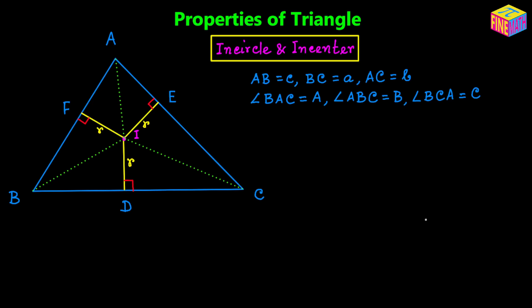Each of these perpendiculars will be of equal length, and let's denote that as lowercase r, which will be considered the radius of the inscribed circle or incircle. If we draw a circle using I as the center, the circle will look like this, and ID, IE, and IF will be of equal length because they are the radius of the circle. The center of an incircle is usually represented by uppercase I and the radius of the incircle is usually represented by lowercase r.